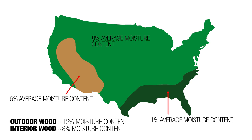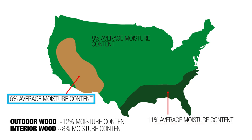That's going to vary. In the Gulf Coast region, in the southeast, it's going to be more like 11 percent because the air is moister there. In the Intermountain West, where it's drier, and in the southwest, in the desert, it's going to be closer to something like 6 percent.